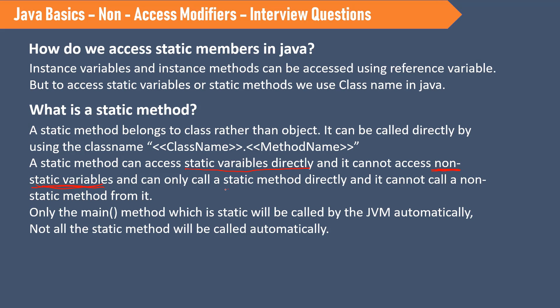A static method also cannot access non-static methods directly. The main method is always static because it will be called by the JVM automatically — the main method has to be executed whenever the class loads. Not all static methods are called automatically; we have to call other static methods from the main method or from other methods.